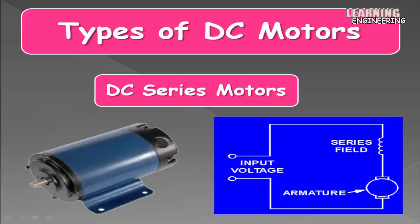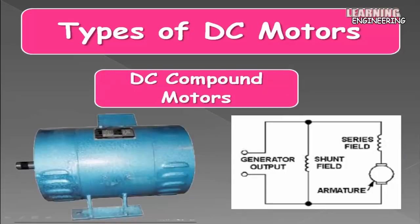DC series motors: in a DC series motor, the armature and field windings are connected in series with the power source. This configuration provides high starting torque, unlike the shunt motor which has good speed regulation but lower starting torque.